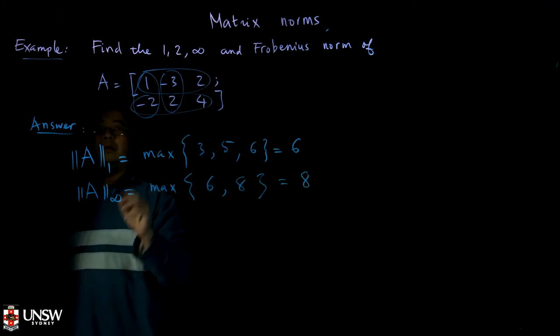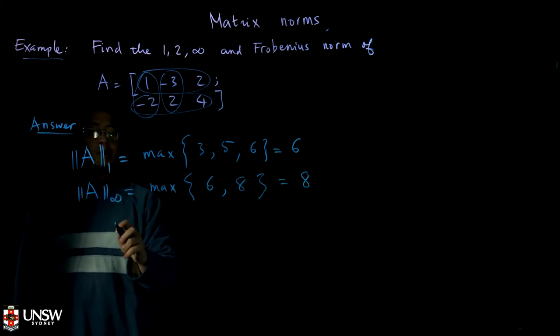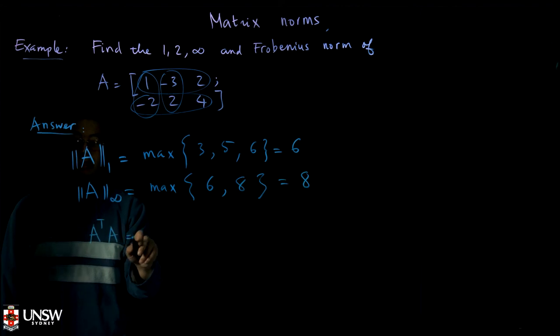So for the infinity norm, that's just the max of the row sums. Now for the 2 norm, first you have to compute the matrix A transpose A.